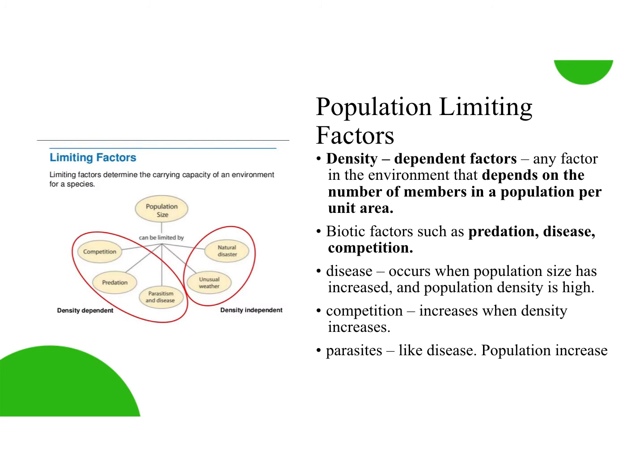The other type of limiting factors are called density-dependent factors. These ones do depend on the number of members you have in a population. These are also going to be biotic factors — meaning living things. This could be like predation, disease, or competition. Let me give you some examples of how these could work.